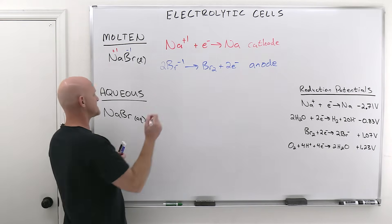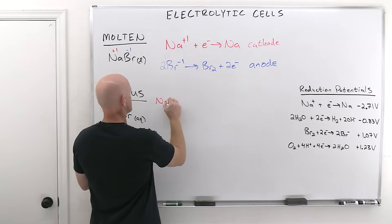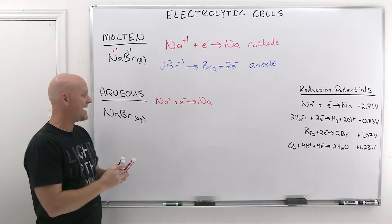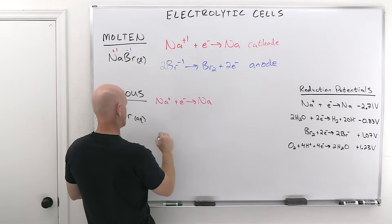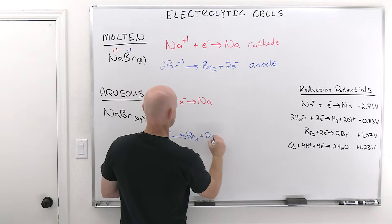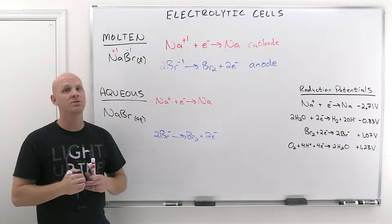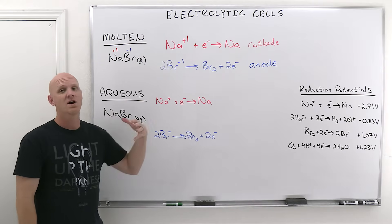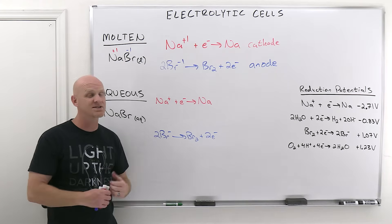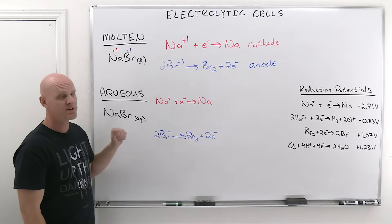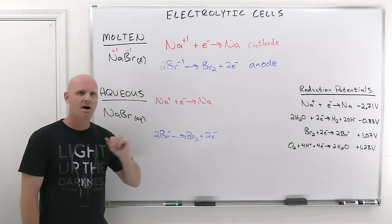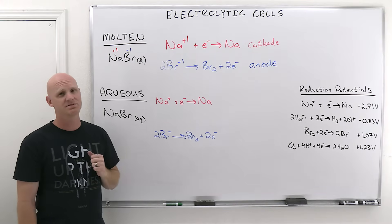We've got some options here. Sodium ions still have a chance of getting reduced at the cathode, and bromide ions still have a chance of getting oxidized at the anode. But with aqueous electrolysis, we now have water, and water can also get oxidized and reduced. In aqueous electrolysis, you're only going to get one reduction reaction at the cathode and one oxidation reaction at the anode, and your job is to figure out which one.